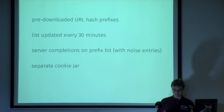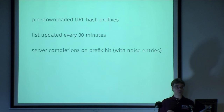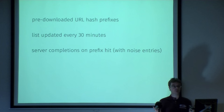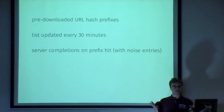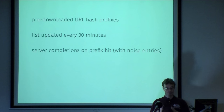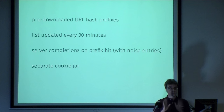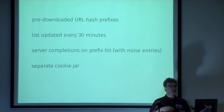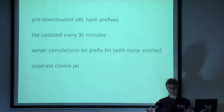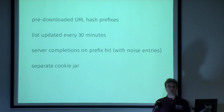On top of that, in Firefox we also add a couple of noise entries. When we go and ask for a particular prefix to see all of the full hashes for that one, we also throw in three other prefixes that you're not visiting, to obscure which one you're really interested in. We also use a separate area of the browser for all of the safe browsing connections — list updates, server completion — all of that stuff happens with a separate cookie jar, so it doesn't get mixed in with your Gmail cookie or anything else you might be doing on Google sites.